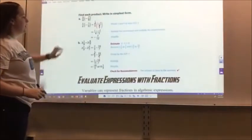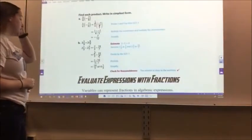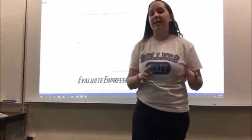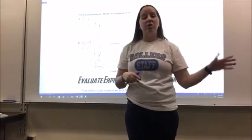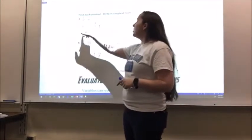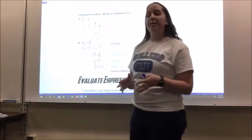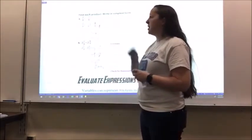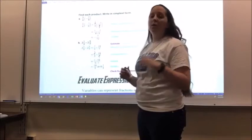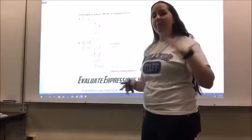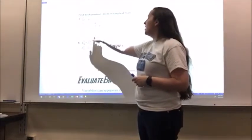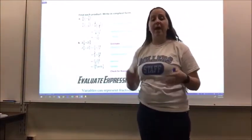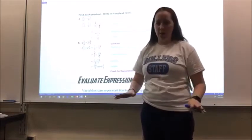Let's look at another example: find each product in simplest form — 3/4 times negative 7/9. Rational numbers can be positive or negative, same as with integers from last chapter. I notice that 3 and 9 have common factors, so I'll simplify those first: 3 cancels to 1, 9 cancels to 3. Then 1 times negative 7 is negative 7, and 4 times 3 is 12. You can also just multiply through and simplify at the end — it works the same way.